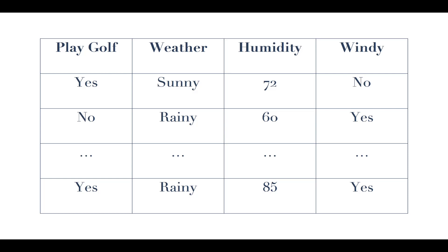The first column is whether golf was played — yes or no, the only two values. The next column is weather: sunny or rainy. We then record humidity and whether there was wind or not. You'll notice that three of these four columns are categorical variables — yes/no, sunny/rainy — discrete variables, not continuous. However, humidity is a continuous variable.